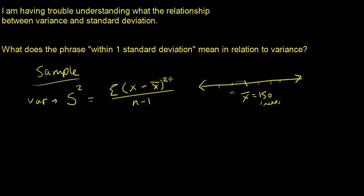There are other measures of variation that use absolute value — the mean absolute deviation — but variance has better properties in terms of bias and is a better statistic overall. The squared term has nice mathematical properties, which is why we square rather than use absolute value. The core idea is the same: eliminate the sign.